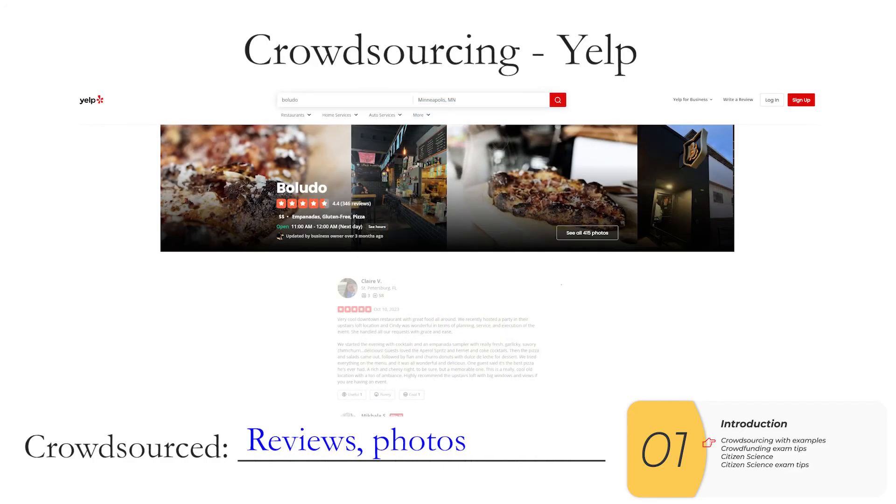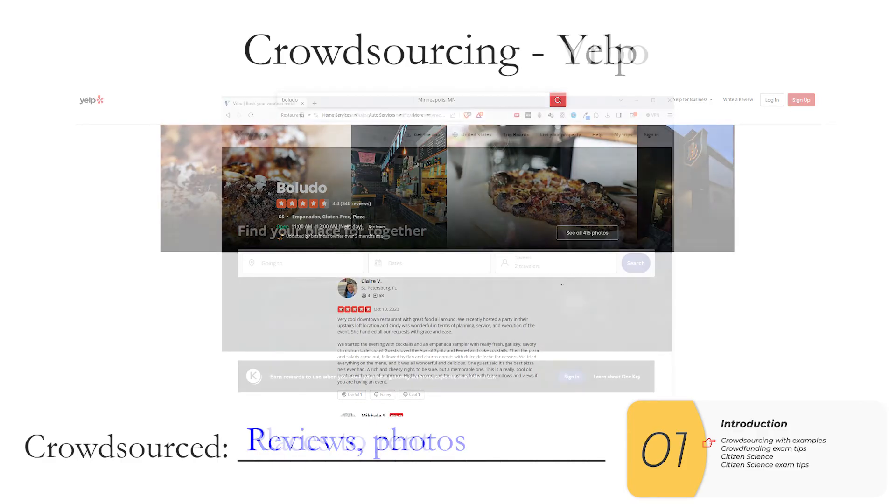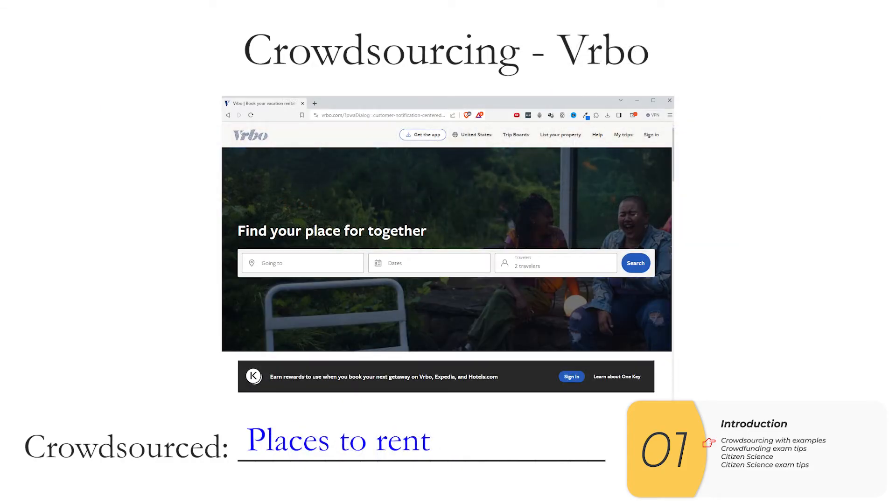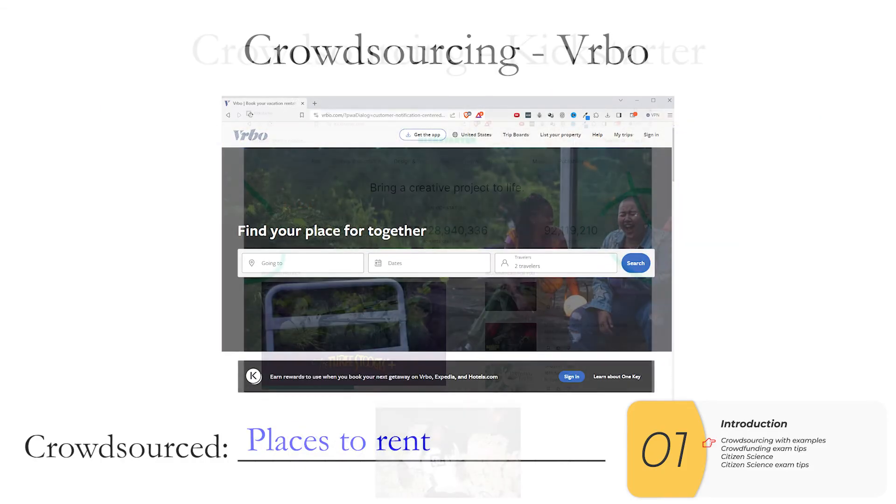We have Yelp, or TripAdvisor, or Google reviews, where we are crowdsourcing reviews, as well as photos. Vrbo, or Airbnb, where we are crowdsourcing places to rent.